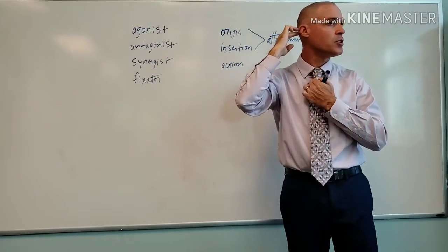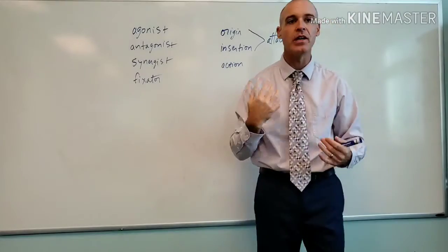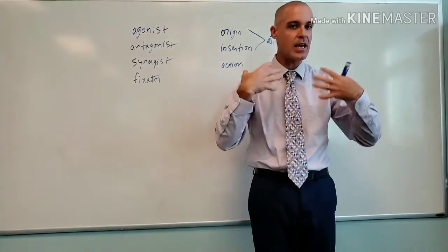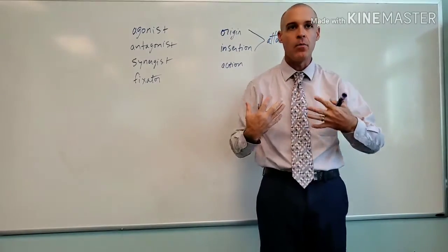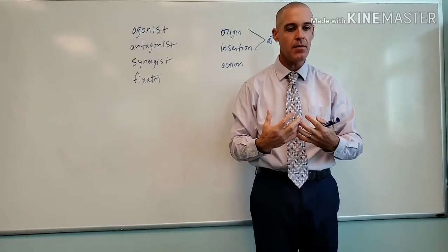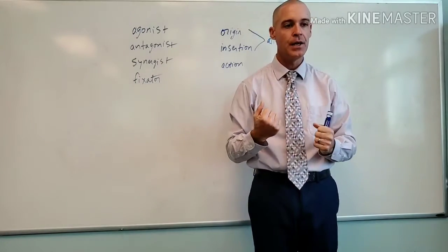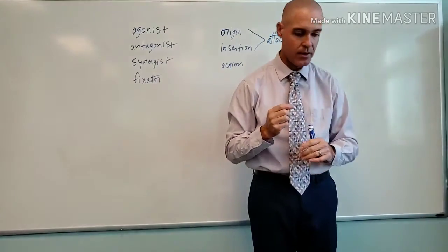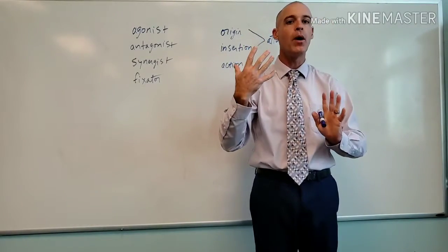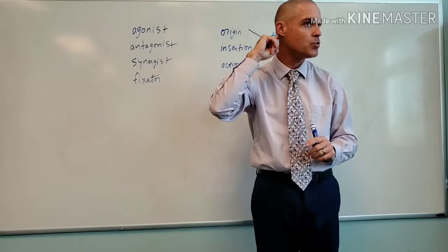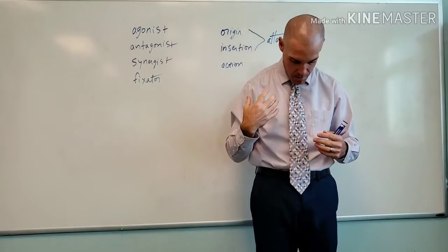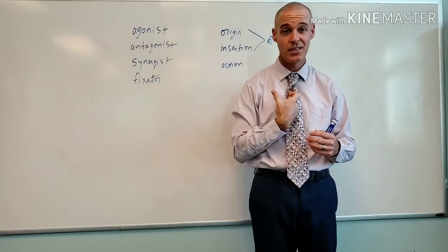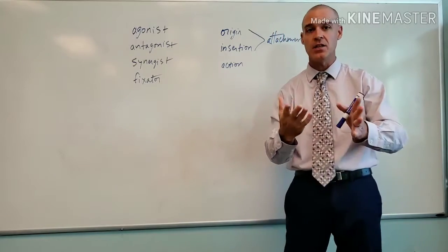So one of these ends is going to be insertion. I have to know the action. The action of the sternocleidomastoid is to flex and contralaterally rotate. As I flex my head and rotate — flexing and rotating — which bone is moving the most? It's the mastoid. The mastoid process is moving the most. My sternum is not moving, my clavicle is not moving.